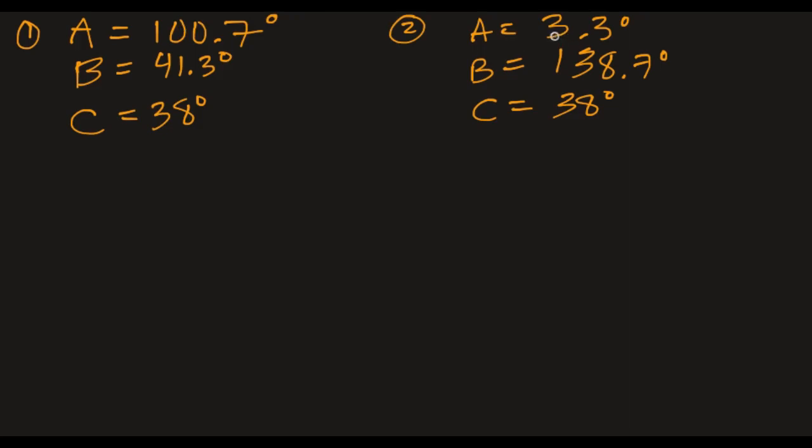Either 3.3 degrees, so it's teeny tiny. Doesn't look like what my picture looked like, but that doesn't mean anything. And the other one is 100.7. So either one of those are options, and we have to give both of them. There are two solutions to this. So what do we have left? We have little A, little B, little C. B is 45. C is 42. So we need to find A in both cases.